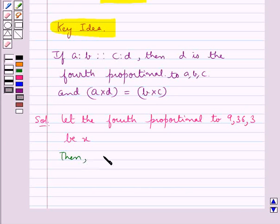Then we have, 9 is to 36 is proportional to 3 is to X. So, this means, the product of extremes, that is 9 into X, is equal to product of the means, that is 36 into 3.